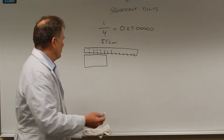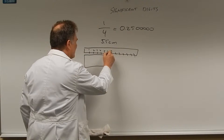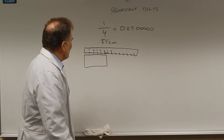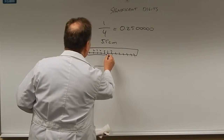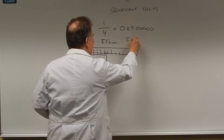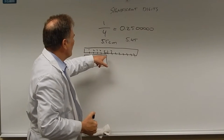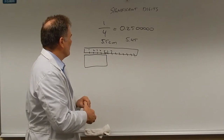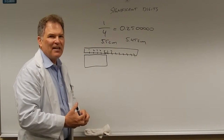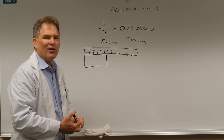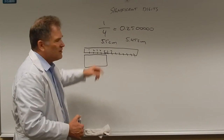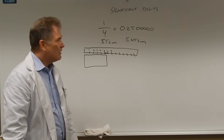Now let's say we had a more accurate ruler marked off in tenths of a centimeter — a millimeter. Now we can see it's between 5.4 and 5.5, and it looks about halfway, so we'd say 5.45. If you report that measurement, whoever reads it would think you had a ruler marked off in millimeters. If you reported just 5.5, they'd think your ruler was only marked off in centimeters. The number of digits tells the reader how accurate the instrument was.